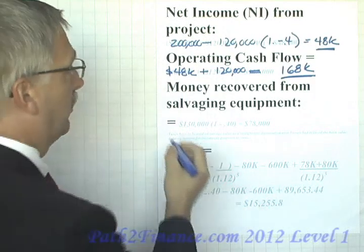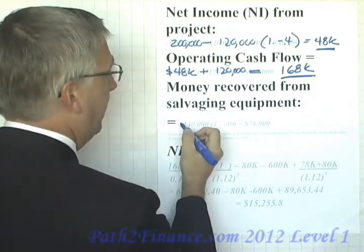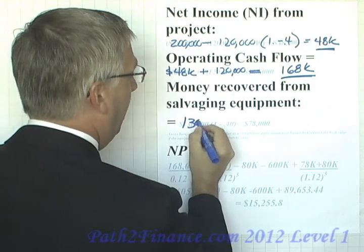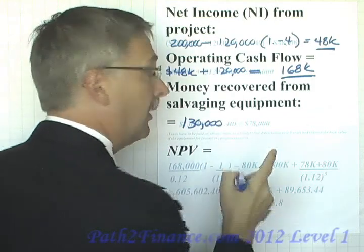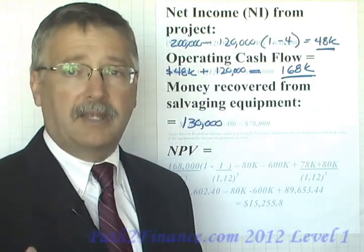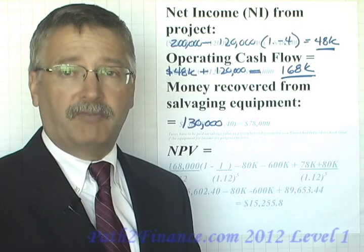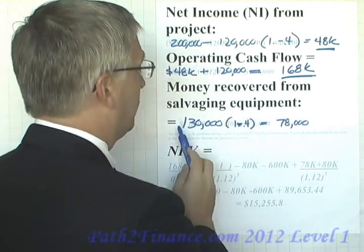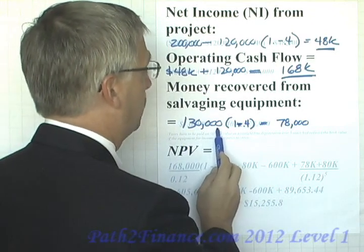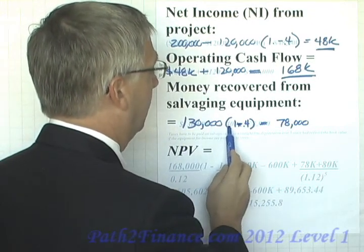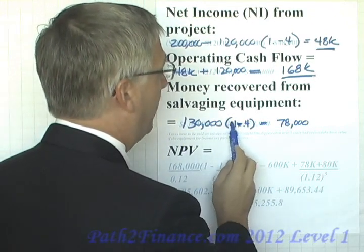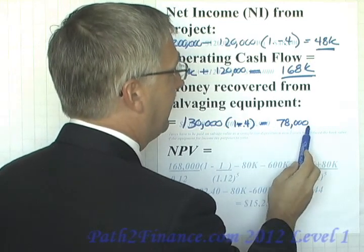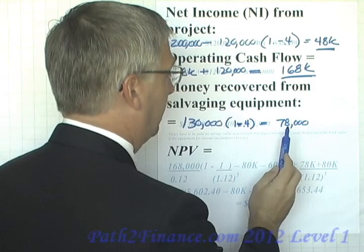At the end of its life we're going to recover some money by selling off the salvaged equipment. We're going to get $130,000, but we're going to incur a tax liability on that because the book value is zero, so we will actually have a gain on that. We take our $130,000 times 1 minus the tax rate, giving us net proceeds of $78,000 after we pay our tax bill.